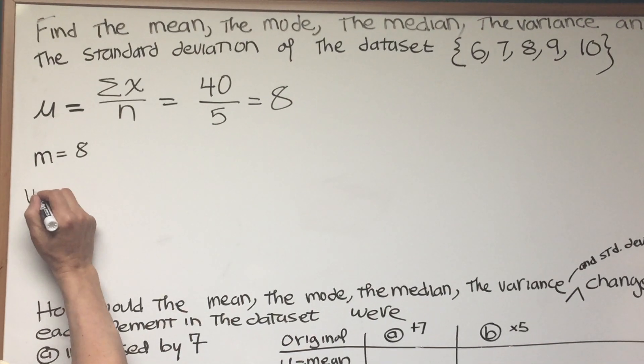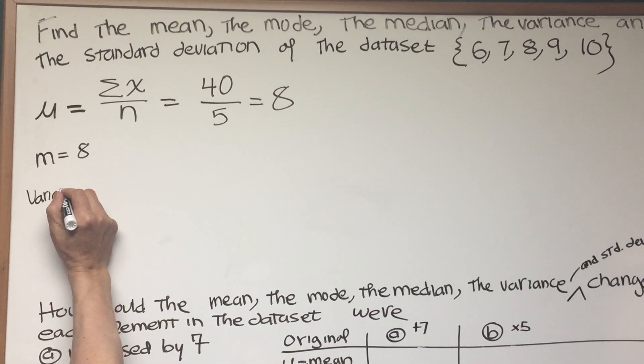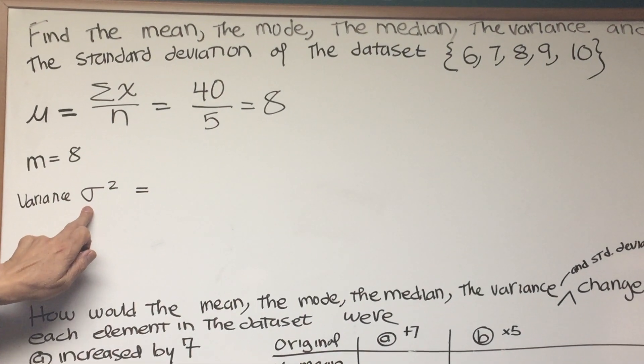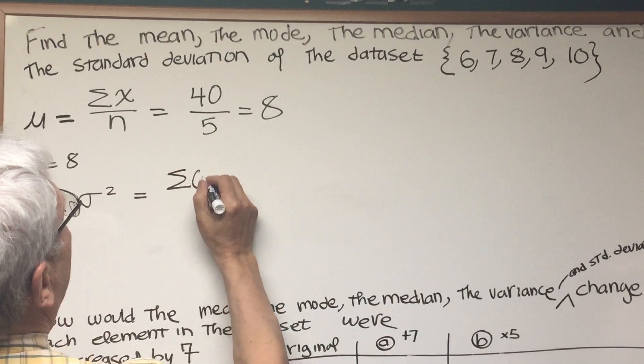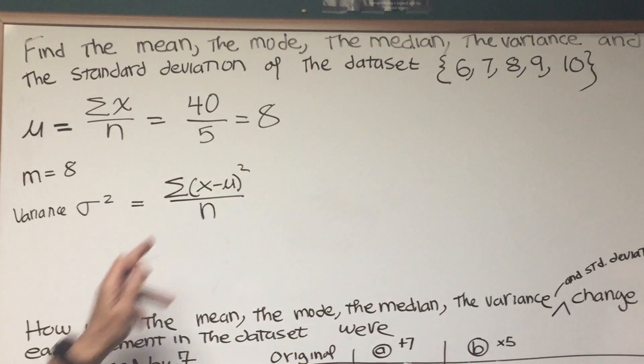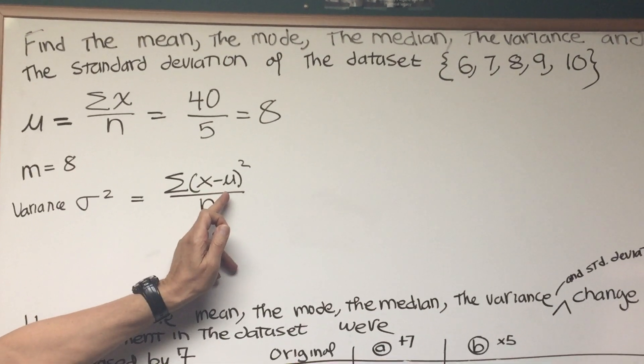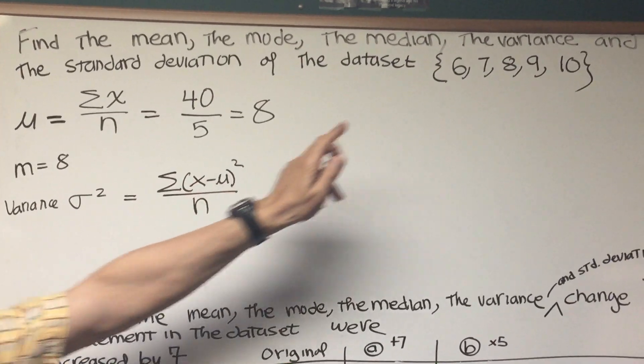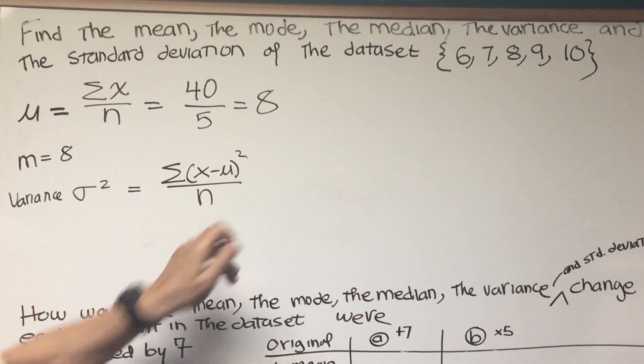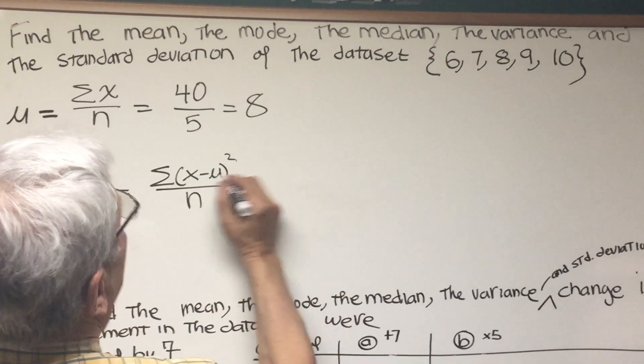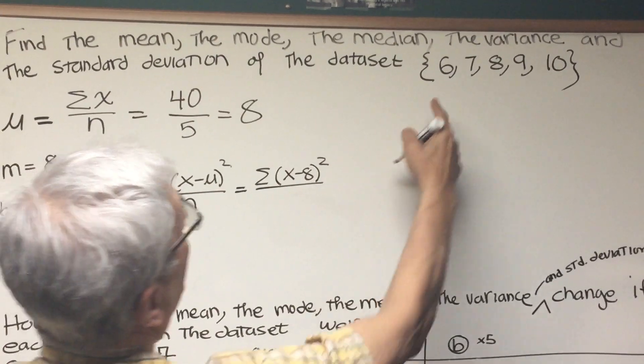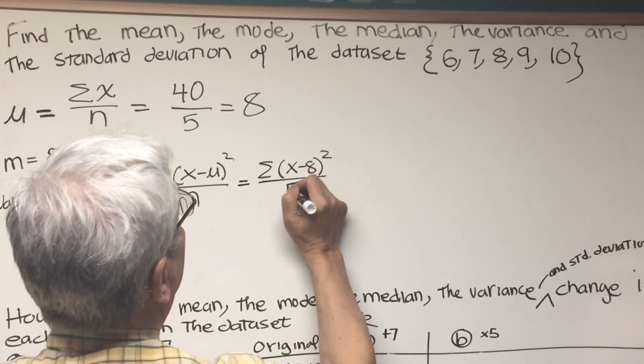Well, the formula for the variance, the symbol for it is sigma squared σ², and that's equal to the sum of (x - μ)² over n. That is, it's the sum of the deviations, of the individual deviations, that is, the difference between each element and the mean squared, add all those up, and divide by the number of elements. In our situation, we know the mean is equal to 8. So it's going to be (x - 8)² over 5.